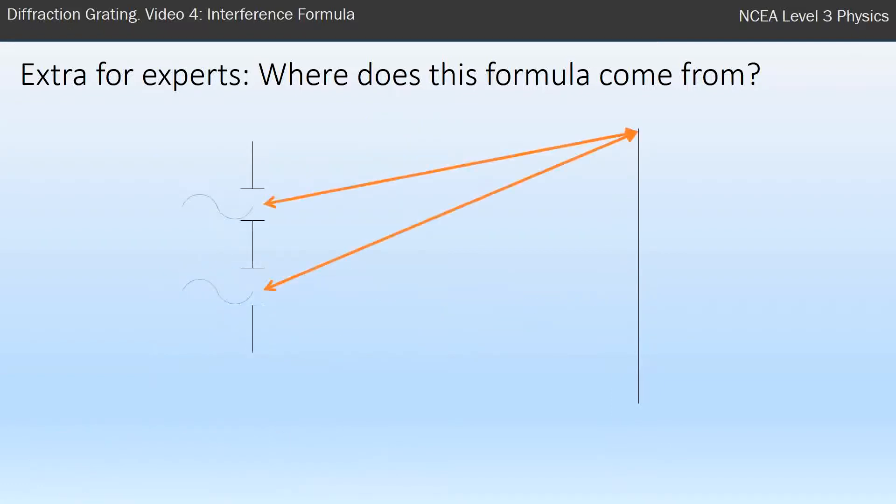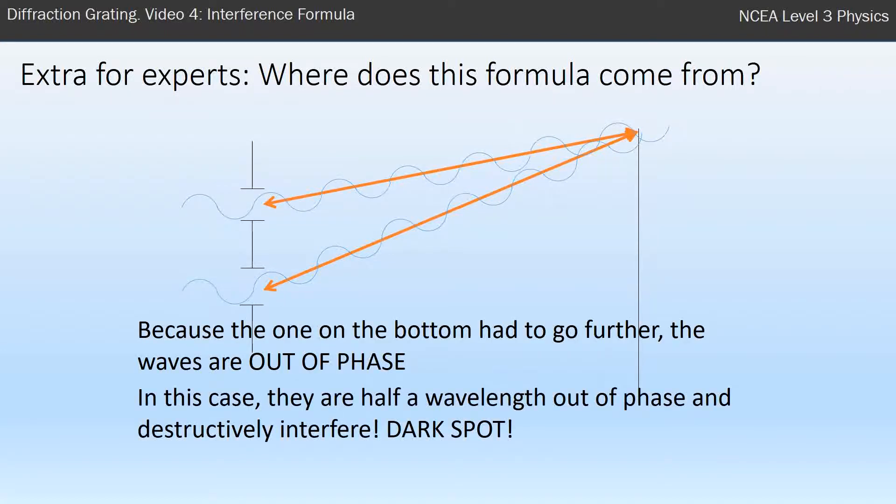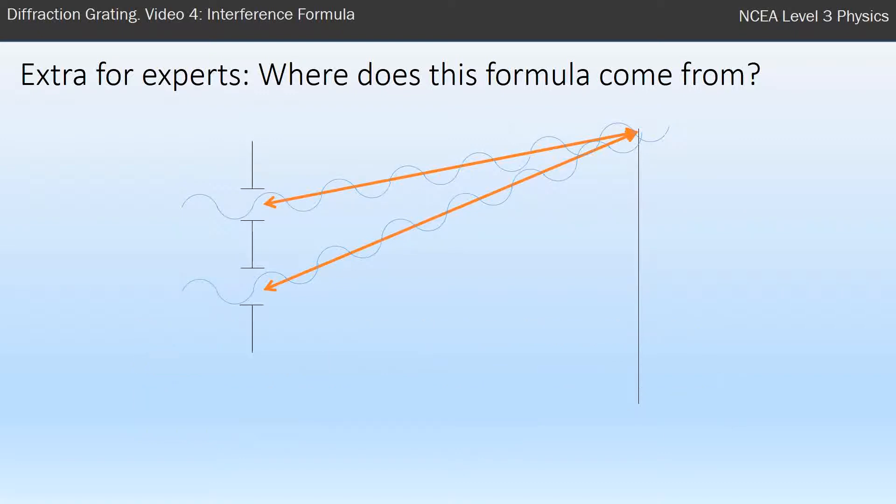Give another example, looking at some other point on the screen up here, look at how far the waves have to travel. When you see one wave has to travel further than the other, and because of that they arrive out of phase. And in this case they're completely out of phase, and we get destructive interference, it's a dark spot.